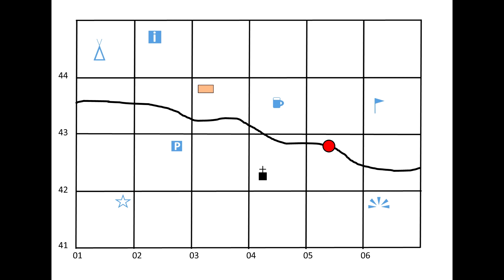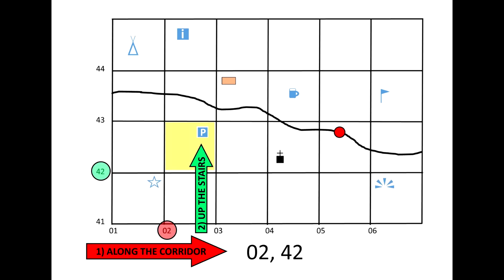In this first example, we're going to look at the car park and the basic process and principles you need to apply when creating four-figure grid references. The first thing we're going to do is go along the corridor — so go along the bottom of the map. We go over zero one and then zero two. Then we go up the stairs — up the side of the map — so four one, four two. Our first four-figure grid reference is zero two, four two.